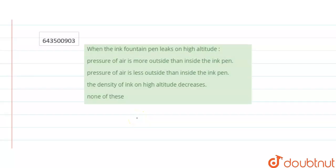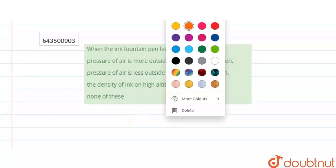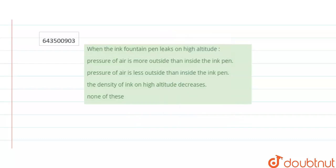Hello everyone, let us see this particular question now. Question says when the ink fountain pen leaks on high altitude. Pressure of air is more outside than inside the ink pen. Pressure of air is less outside than inside the ink pen. The density of ink on high altitude decreases. None of these.